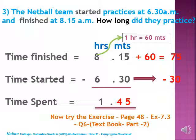In the hour column you now have 7. 7 minus 6 is 1. So the answer is 1 hour and 45 minutes. When subtracting hours and minutes, if the first number in the minutes column is smaller than the second number, take 1 hour from the hour column — which means 60 minutes — add 60 to the smaller number, then subtract and get the answer. Try these kinds of questions and do your exercise on page 48.